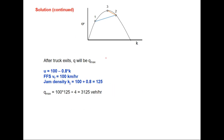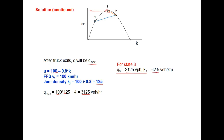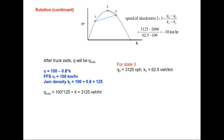After the truck exits, q₃ is the maximum flow. The free flow speed is 100 km/h and the jam density is 100 / 0.8 = 125 vehicles/km. Therefore the maximum flow q₃ = (1/4) × free flow speed × jam density = 3125 vehicles/hour. For state 3: q₃ = 3125 vehicles/hour, k₃ = half of jam density = 62.5 vehicles/km. The speed of shockwave 2-3 = (3125 - 2000) / (62.5 - 100) = -30 km/h. So platoon dispersion occurs at a rate of 30 km/h in the backward direction.